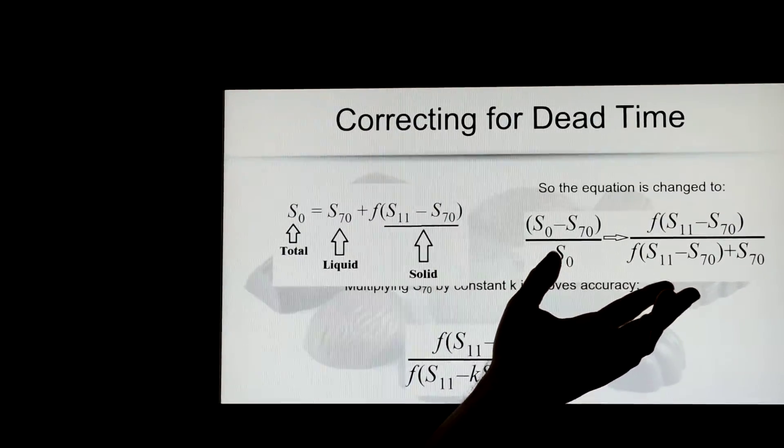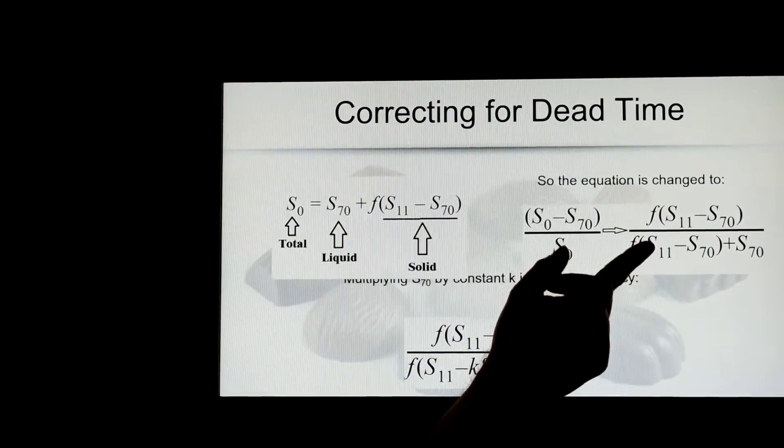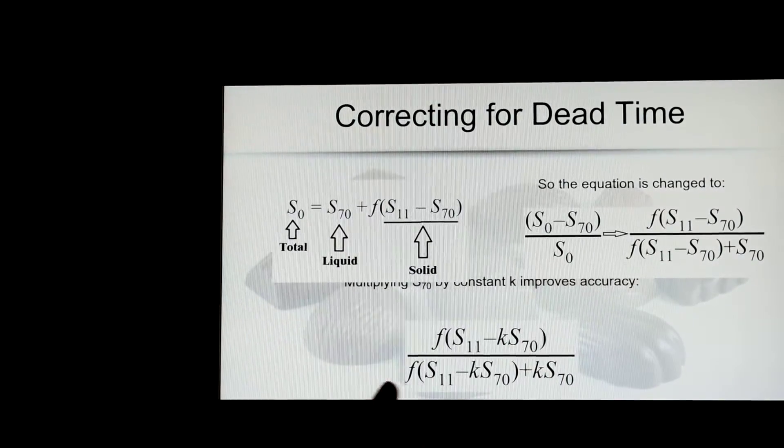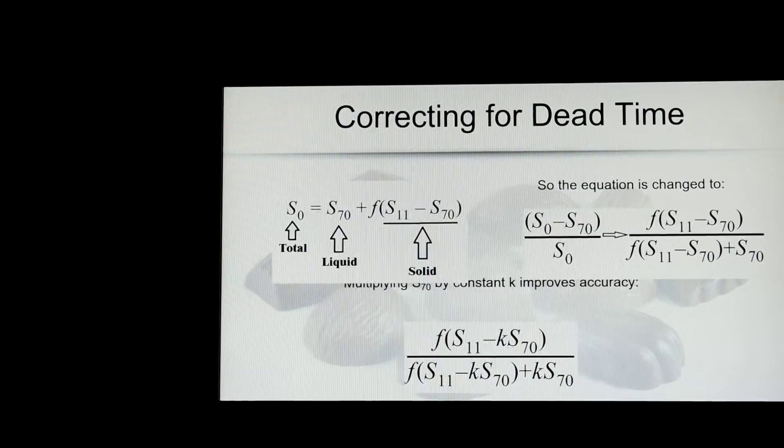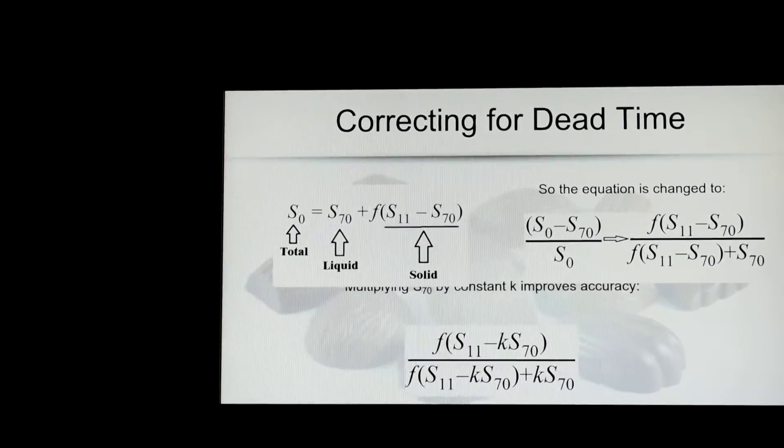And then we also said there's a correction factor on F70. We measure at 70 milliseconds for the liquids. So wherever you see F70, you add a K. And there it is. Now everyone can understand the signal and even work with it. It's very intuitive and straightforward.